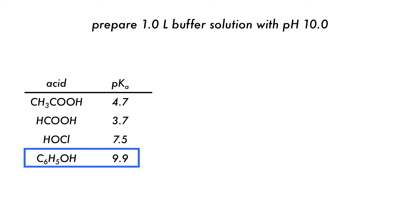Phenol is a good choice because it has a pKa of 9.9. Now, we must make use of the Henderson-Hasselbalch equation for buffers to determine the ratio of conjugate base and acid concentrations.